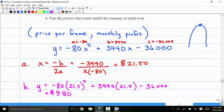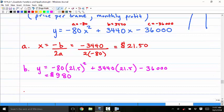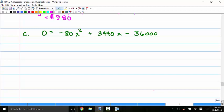So the next question is to find the price that would enable the company to break even. So what's going to equal zero? For this question, to break even, you want your profit to be zero, right? If you want to break even, you want your profit to be zero. So for part C, you're going to set zero equal to negative 80, x squared.